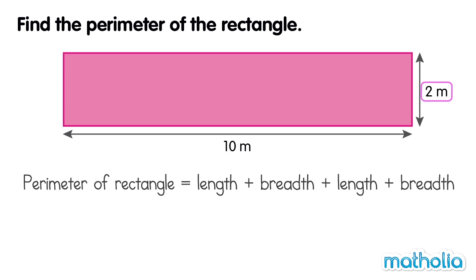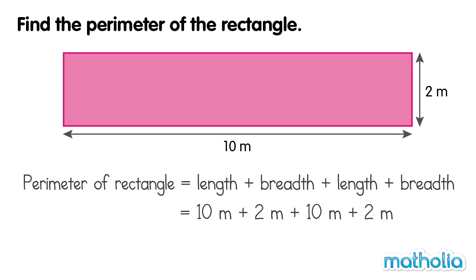So the perimeter is equal to 10 m plus 2 m plus 10 m plus 2 m, which is equal to 24 m. The perimeter of this rectangle is 24 m.